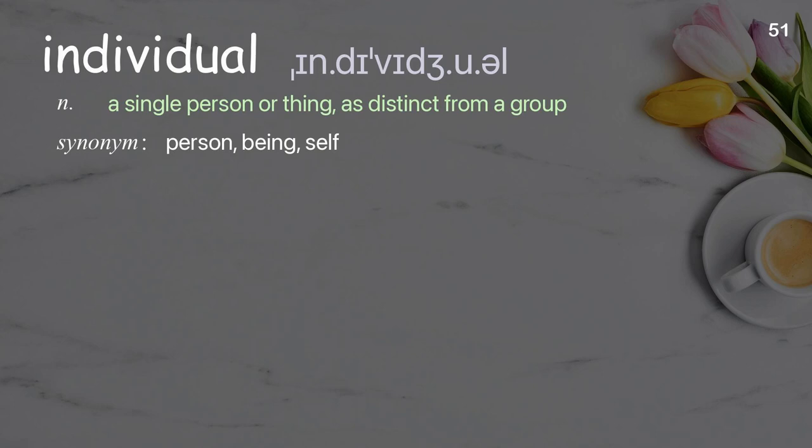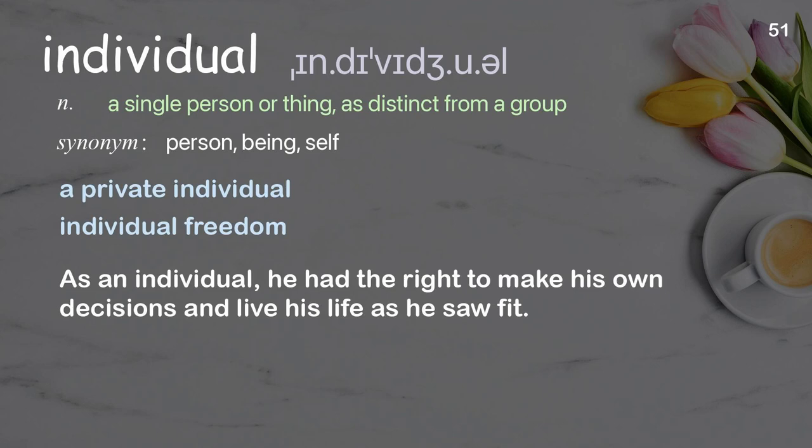Individual: a single person or thing as distinct from a group. Examples: a private individual; individual freedom; as an individual, he had the right to make his own decisions and live his life as he saw fit.